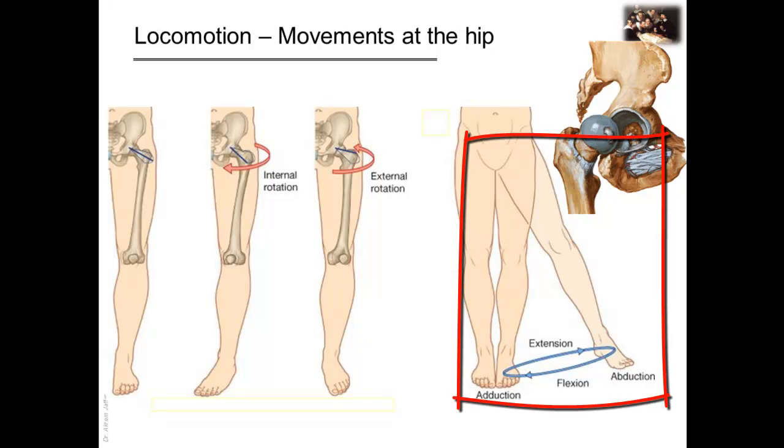Circumduction, as you can see here, is a combination of the first four movements: flexion, abduction, extension, and adduction. So, circumduction is not a distinct movement by itself. It's the movement by which the distal end of a limb describes the base of a cone. Medial and lateral rotation is a movement around the long axis, and thus should not be confused with circumduction.